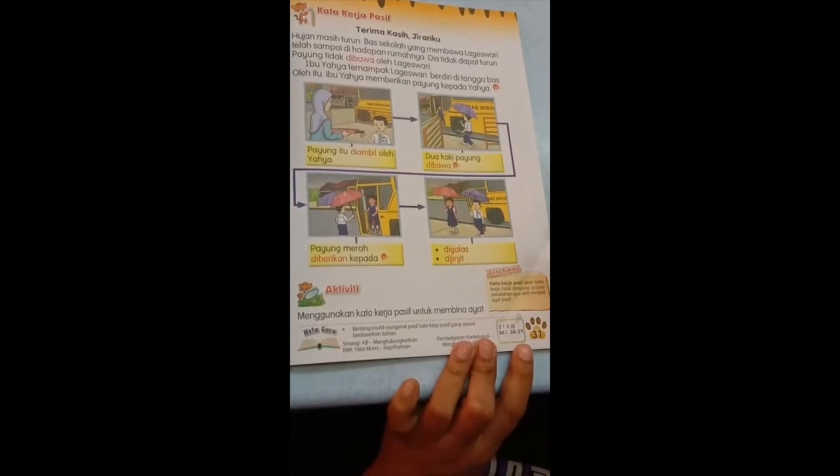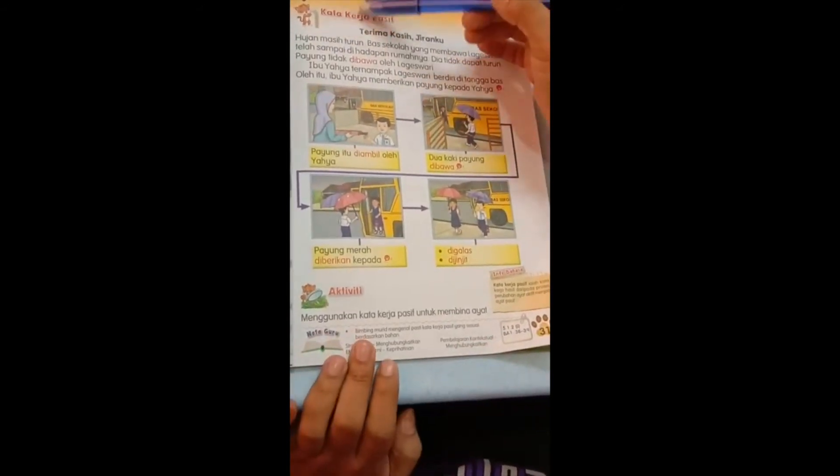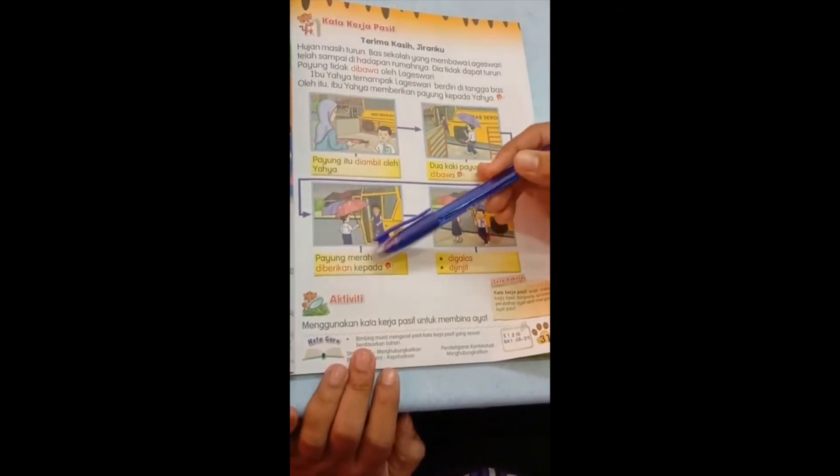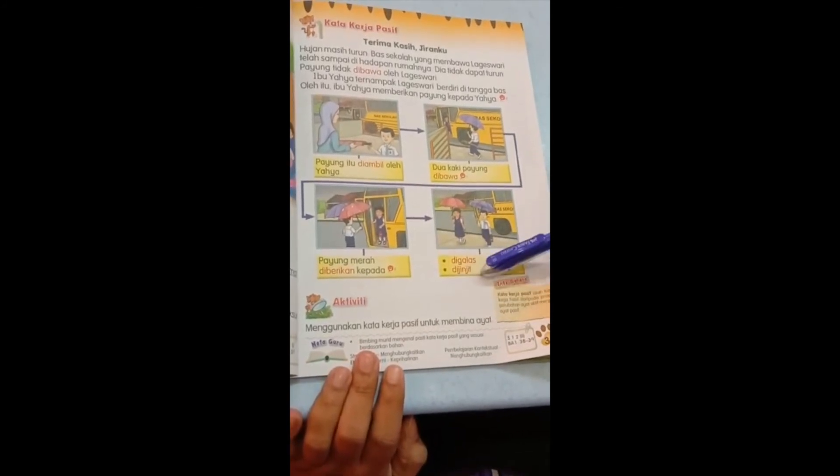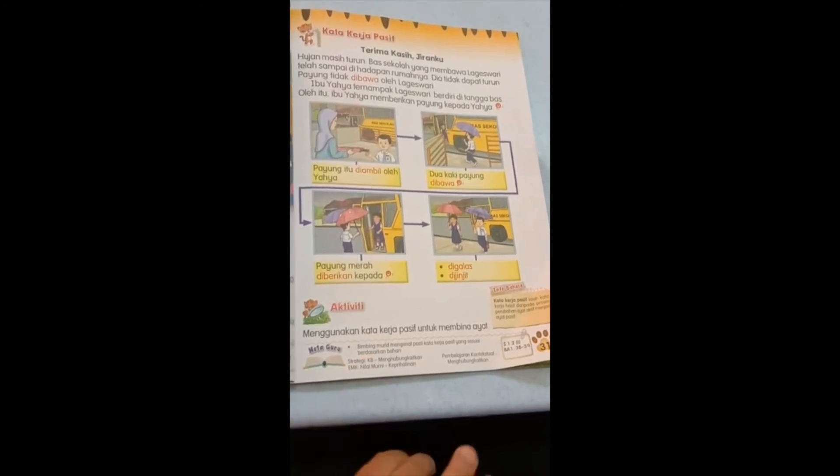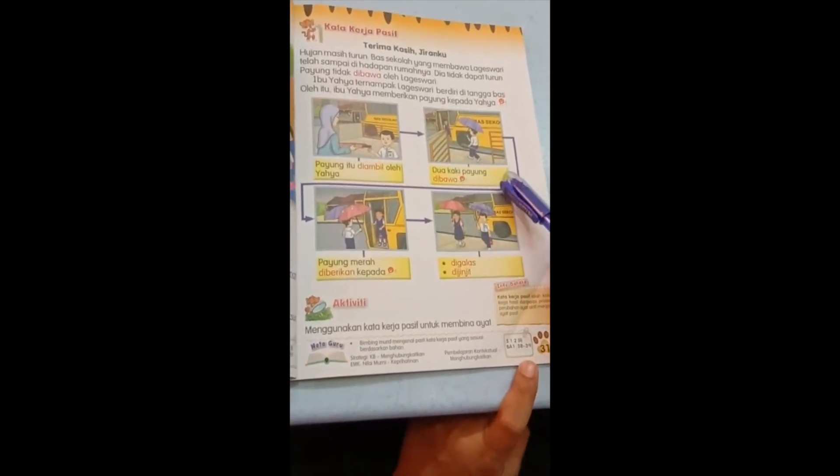Your work now in your exercise book. Please rewrite only four sentences. Under kata kerja passive. I want you to complete this sentence. Number one, number two, third sentence for digalas, fourth sentence for dijinjit. Saya ulang ya. Kamu kena bina empat ayat. Satu ayat untuk dibawa, iaitu dua kaki payung dibawa oleh Yahya. I give you this answer.